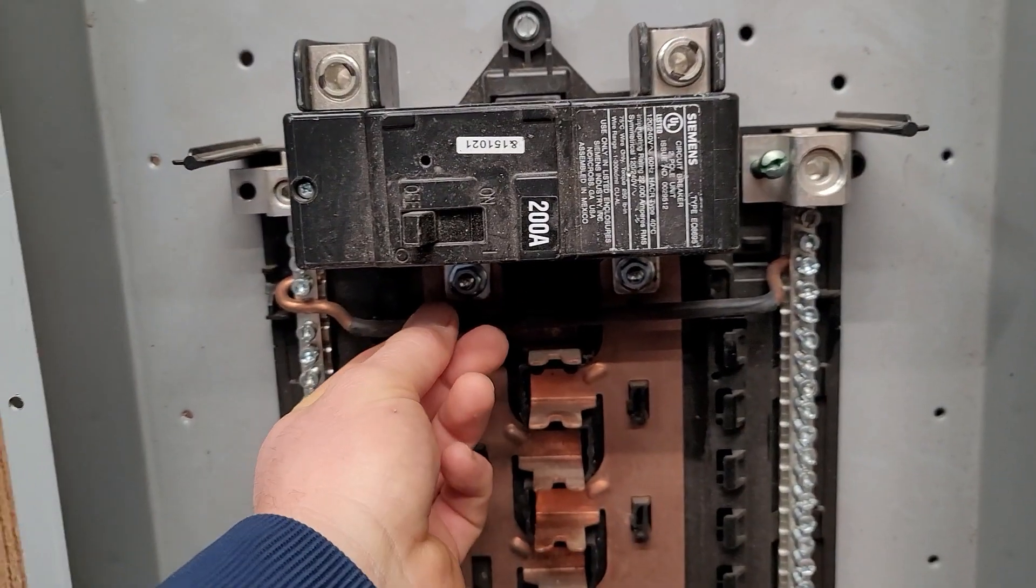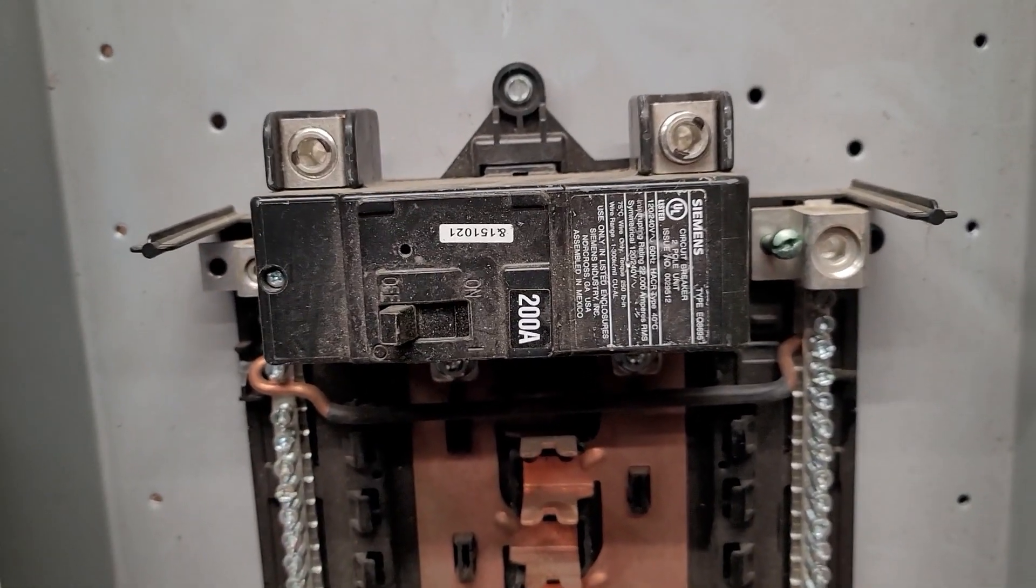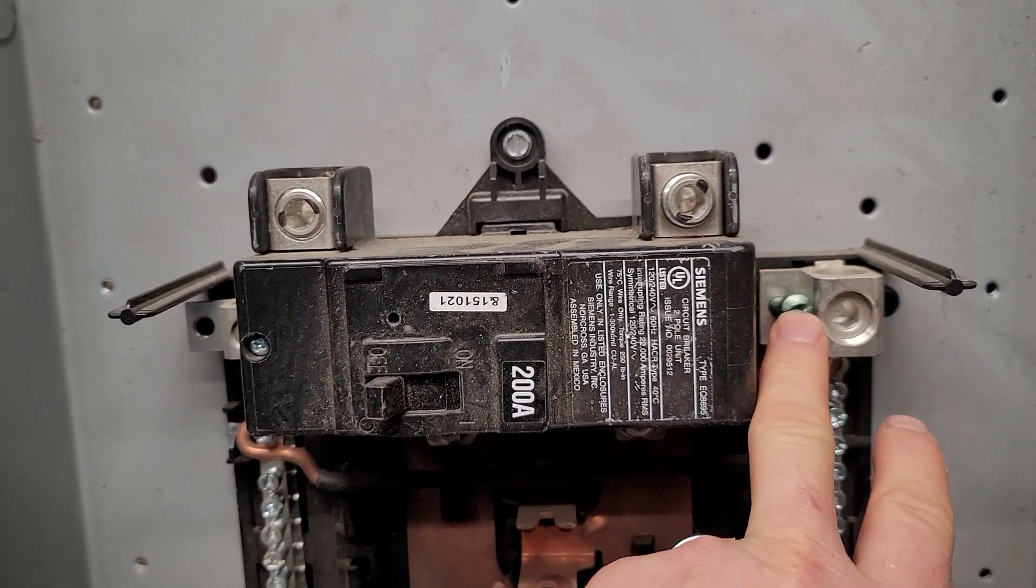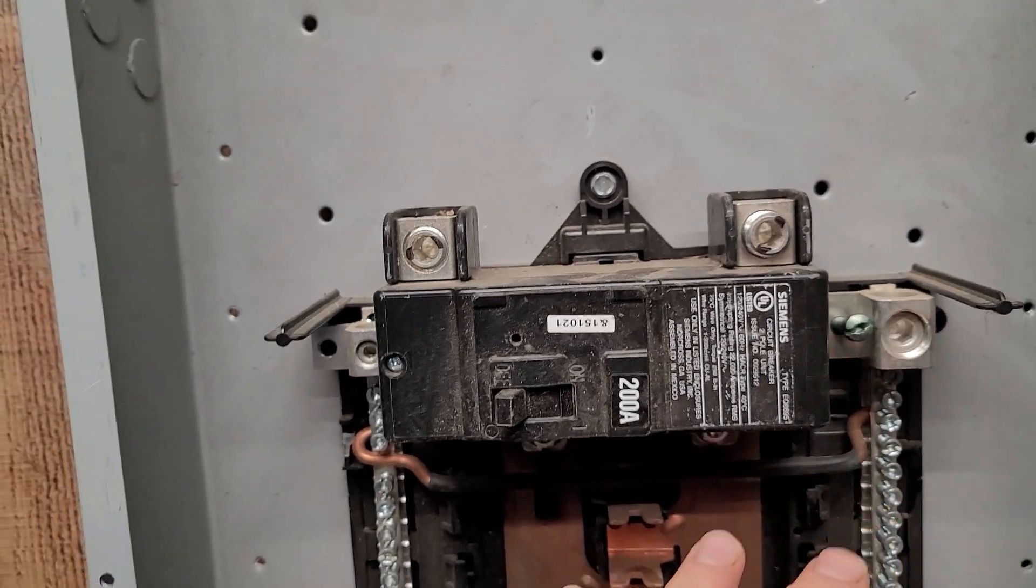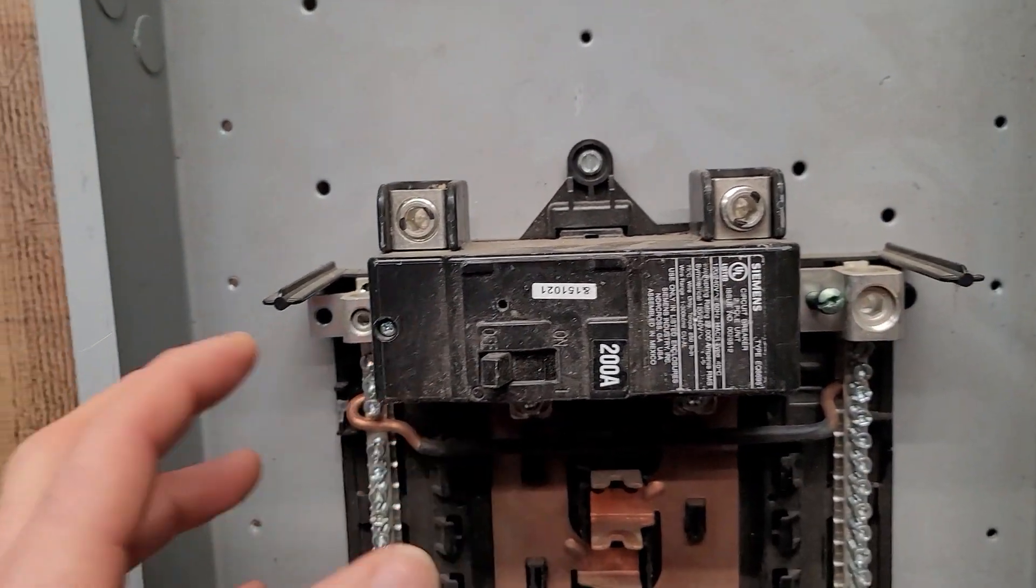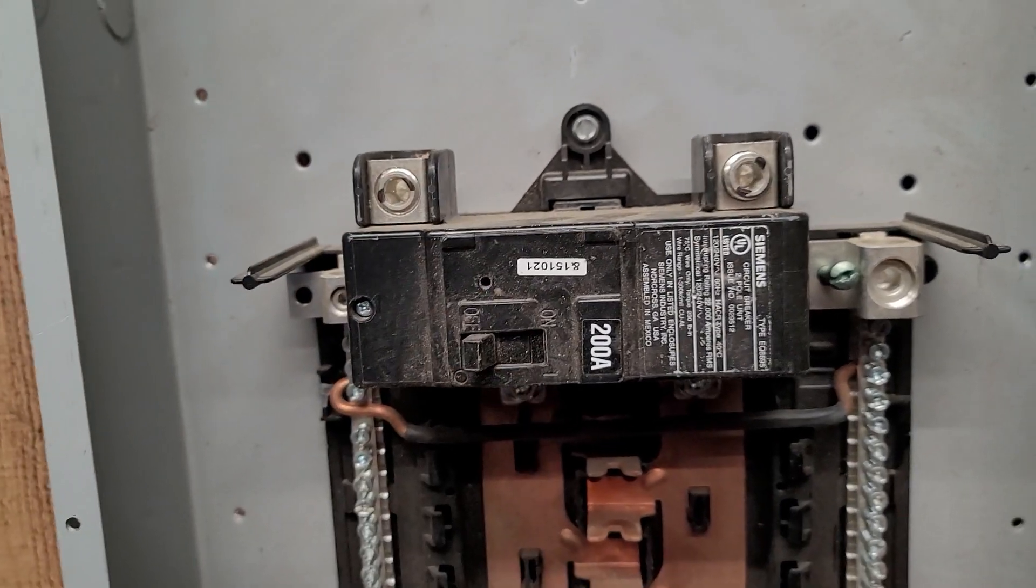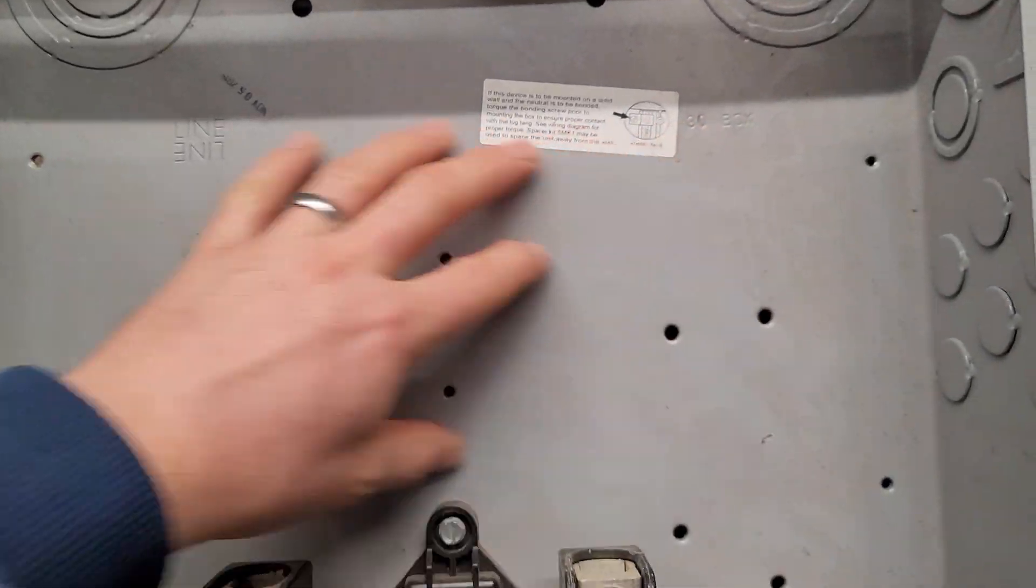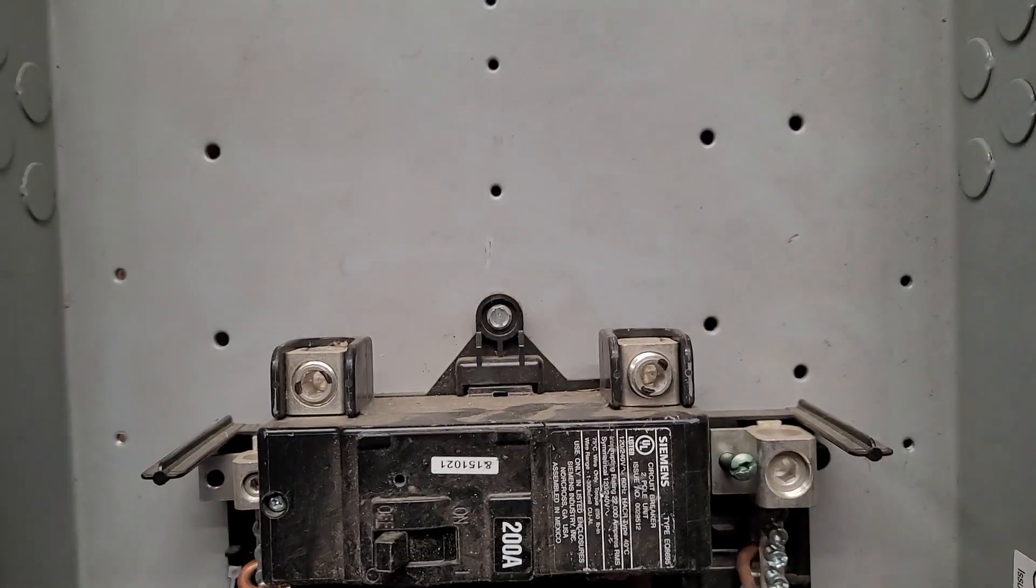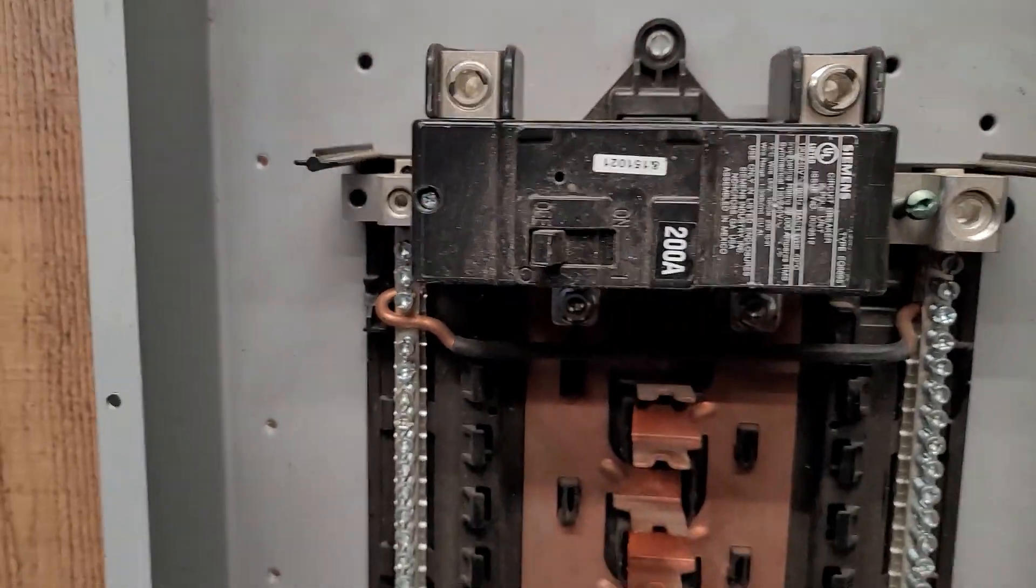So today I want to talk about this little bar right here. If this were the first point of disconnect we would drive our main bonding jumper screw in. We'd make sure it was tight and that would connect our neutrals to our grounds here at the system. So whether we put extra ground bars up here everything would be bonded including the frame of the panel, the can itself.